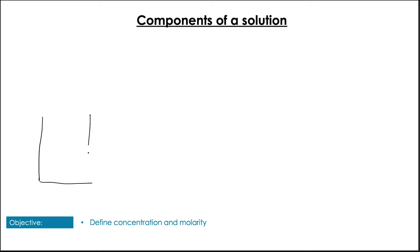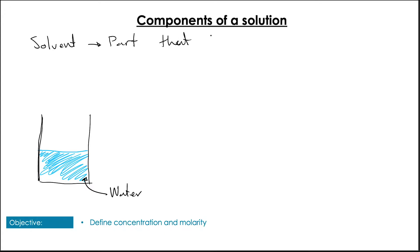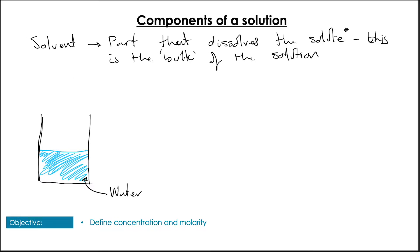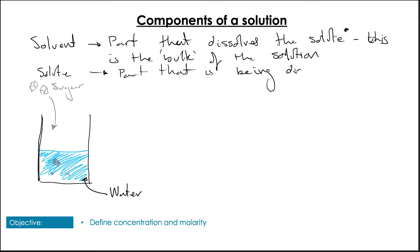On to today's topic — what is a solution? When we talk about a solution, we're usually talking about something dissolved in water. We have water, which we call our solvent — this is the part that everything else is dissolved in, usually the larger amount or bulk of the solution. We then dissolve something in it, like sugar — that is what we call the solute, the part being dissolved, usually making up the smaller proportion. A solute and a solvent together make a solution.